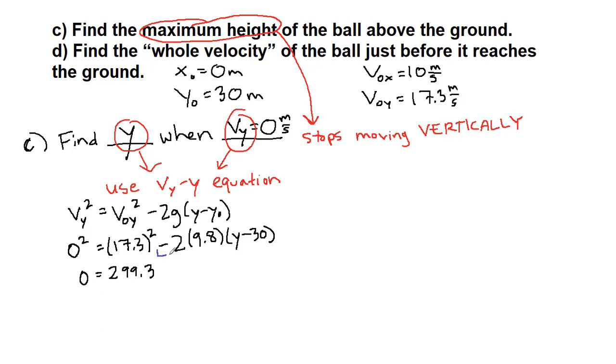Let's clean this up. Zero equals 17.3 squared, which in our calculator is 299.3. I'm going to use some color to help us see this. The negative 2 times 9.8 times y is going to be a negative 19.6y, and the negative 2 times 9.8 times negative 30, two negatives make a positive, we get plus 588. We're distributing these pieces into the parentheses here.